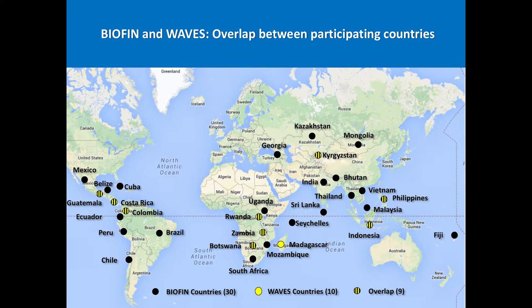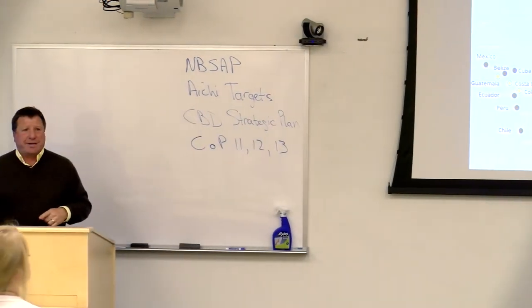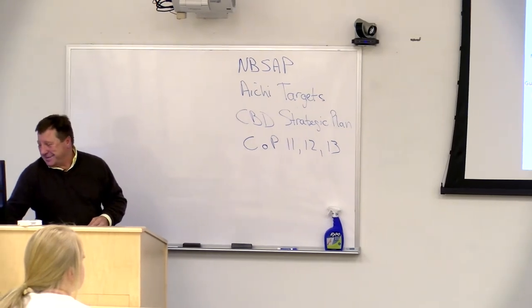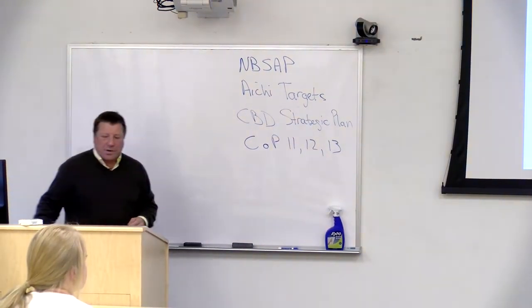We try to leverage our work with other related UN work, particularly WAVES — Wealth Accounting and Valuation of Ecosystem Services — a World Bank project working on national accounting through SEEA. They have 10 countries, substantially smaller than BioFin's 30, but more money — it's the World Bank. We try to overlap with them as much as possible.